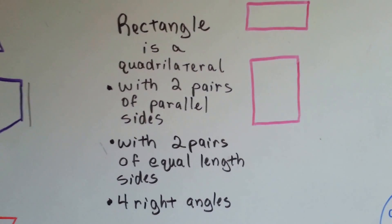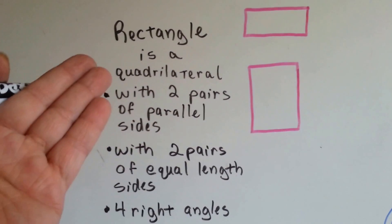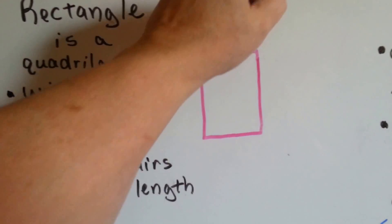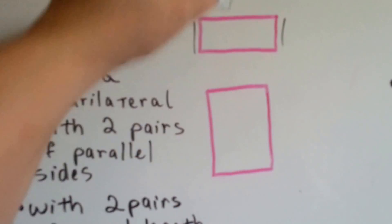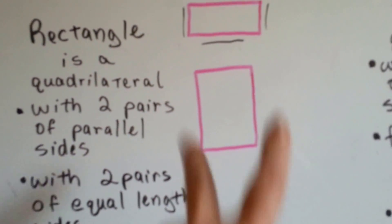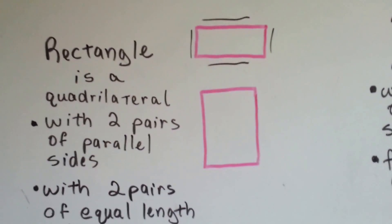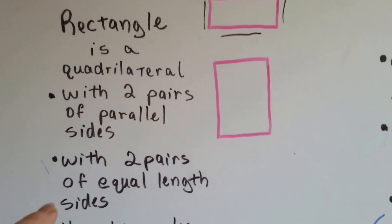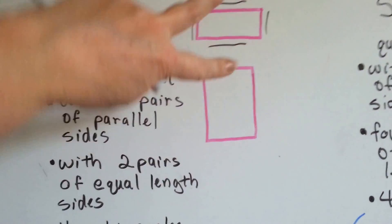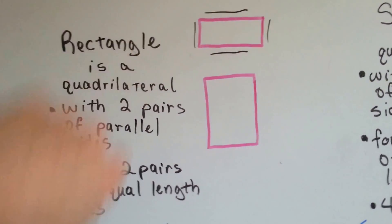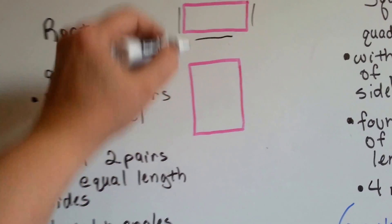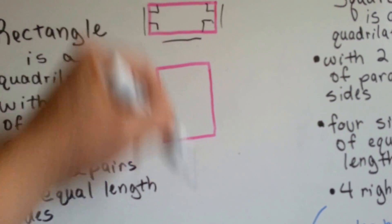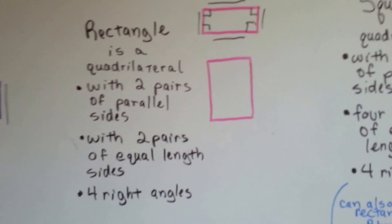Let's look at a rectangle. A rectangle is a quadrilateral, a four-sided shape, and it's got two pairs of parallel sides. This side is parallel to that side, and this side is parallel to that side — so that's one pair, two pairs. Two pairs of parallel sides, and it's got two pairs with equal length sides. And there's four right angles — here, here, here, and here. That's what makes it a rectangle.